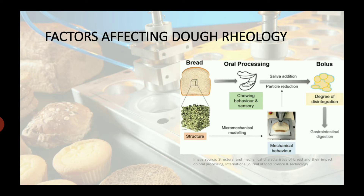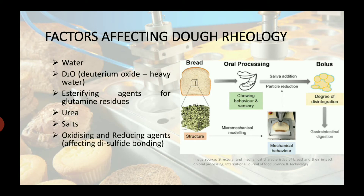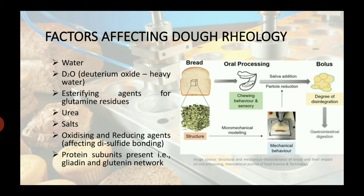Let's discuss some of the factors which affect rheology. First, water — we know in dough development, water plays a significant role in the development of protein structure. Heavy water often has larger mineral deposition, which influences protein development. Other factors include glutamine and esterifying agents for glutamine residue, urea, salts, and oxidizing and reducing agents which affect disulfide bonding. Protein subunits present include the most important gliadin and glutenin network.